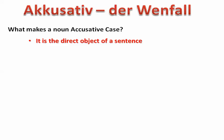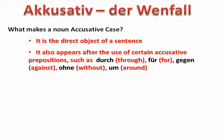It is the direct object of a sentence. Secondly, it appears after certain accusative prepositions in German. These prepositions are always accusative, and they are: durch, für, gegen, ohne, um. If you want to remember them in a song: durch, für, gegen, ohne, um — accusative! Just try whatever helps you to remember them.